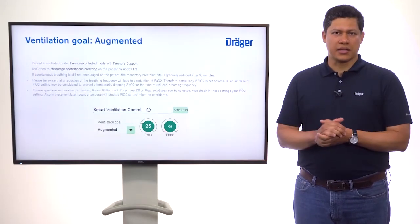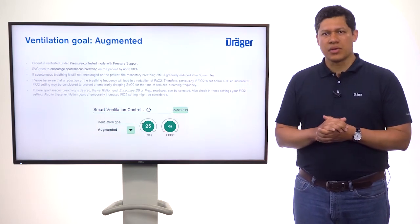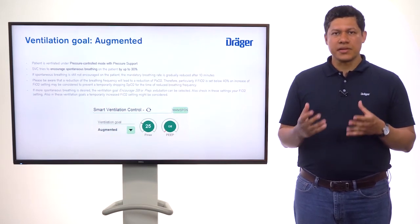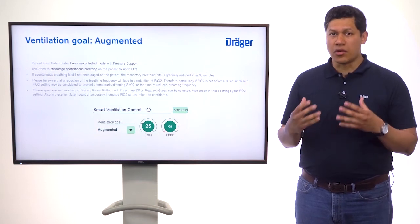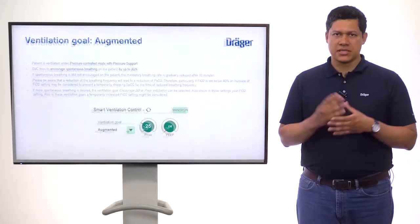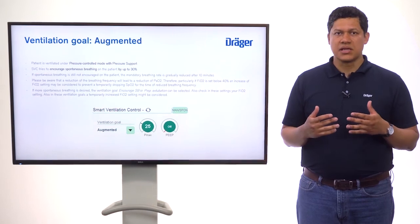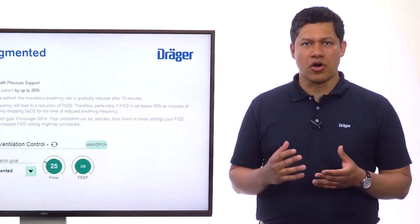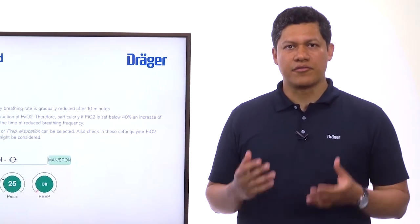The second ventilation goal option is Augmented. The patient will be ventilated under pressure control mode with pressure support. Smart Ventilation Control will try to encourage the patient's spontaneous breathing by up to 30%. If spontaneous breathing is still not encouraged, the mandatory breathing rate will be gradually reduced after 10 minutes. This reduction in breathing frequency will lead to a reduction of PaO2, so if FiO2 has been set below 40%, an increase in FiO2 might be considered to prevent a temporary drop in SpO2.